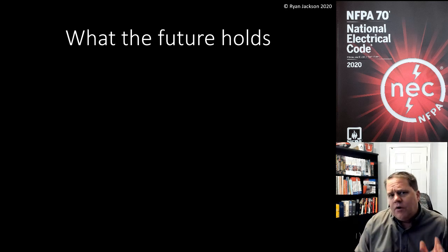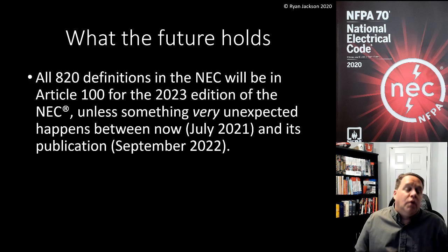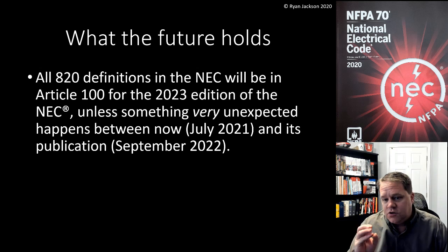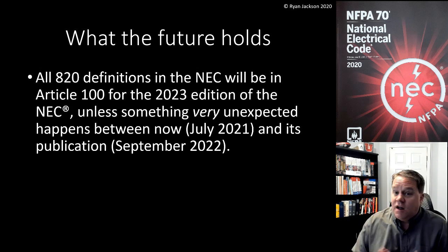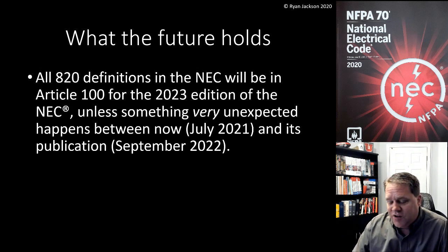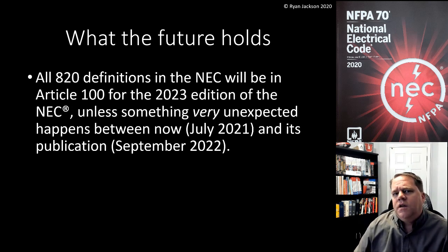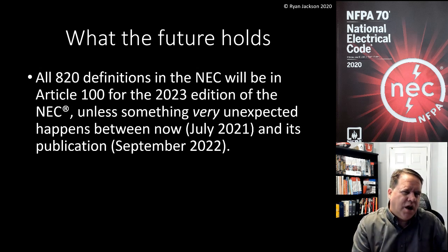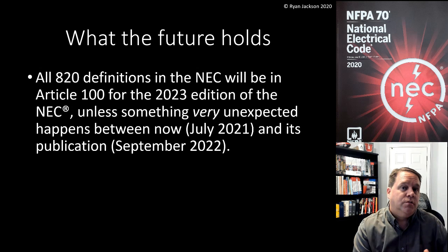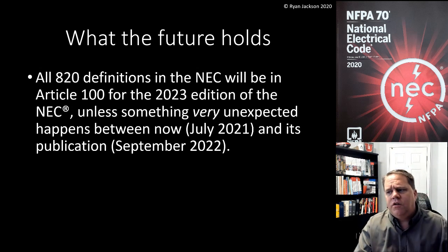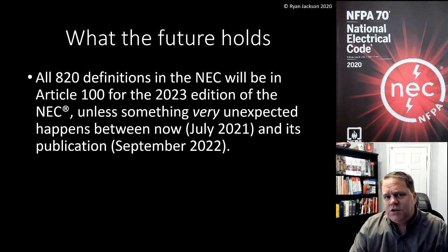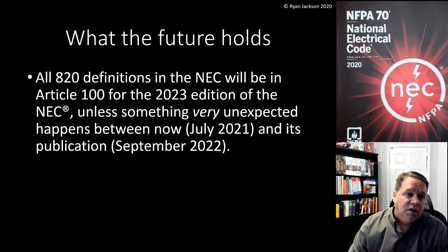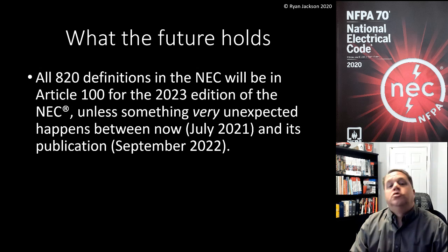What the future holds. I've already mentioned the 2023 code a couple of times. It's July of 2021 right now, and the 2023 code is not yet finalized — we're barely starting that process. But there's a document called the style manual that tells us how to write code, how the code book should work, what terms should and shouldn't be used, and how the code is constructed. They made a change in the latest version of the style manual to say that every definition should be in Article 100.